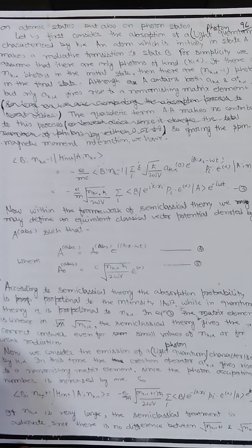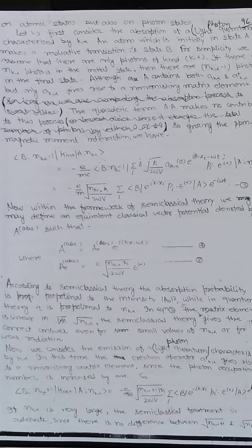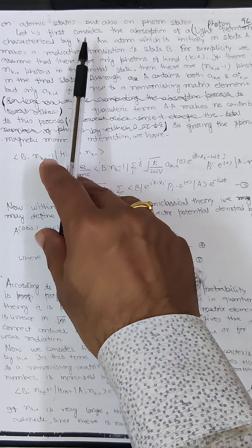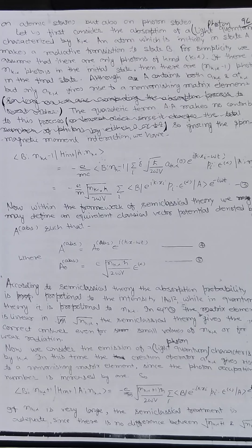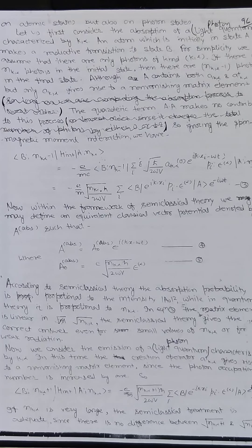Now let us consider the absorption of a light quantum, that is a photon, characterized by (k, α), by an atom which is initially in state |a⟩, making a radiative transition to state |b⟩. For simplicity we assume there are only photons of kind (k, α). If there are n_{k,α} photons in the initial state, then there are n_{k,α} - 1 photons in the final state. Although A contains both a and a†, only a gives rise to a non-vanishing matrix element.